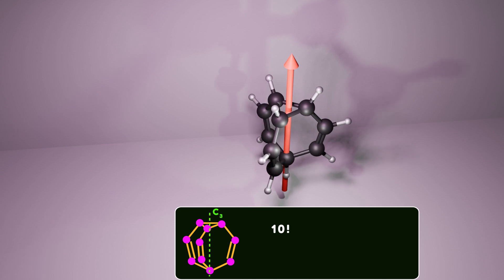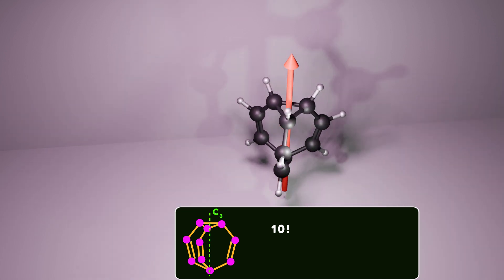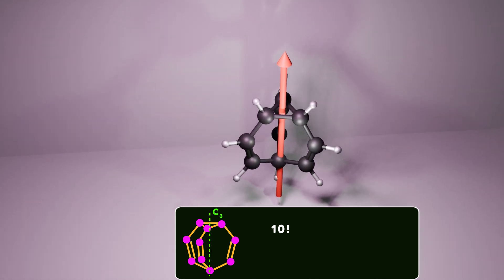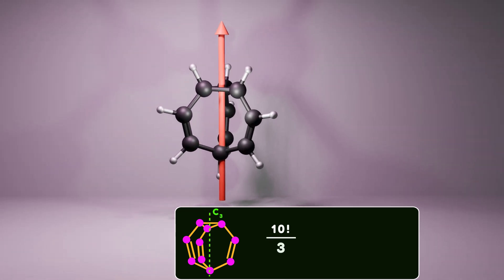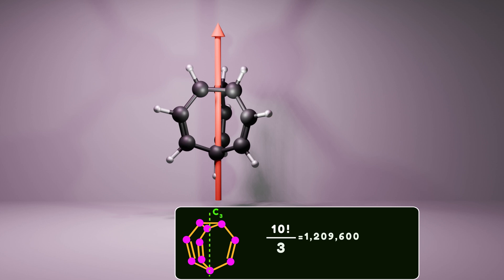This symmetry generates three identical structures. Therefore, we calculate the number of isomers during this self-replicating Cope rearrangement by dividing 10 factorial by 3, resulting in 1,209,600 degenerate structures.